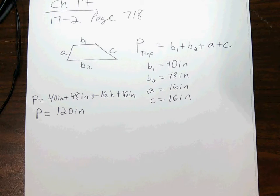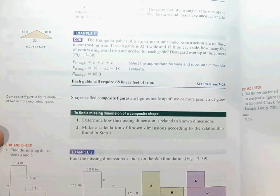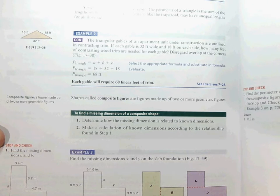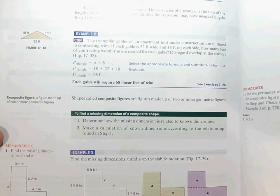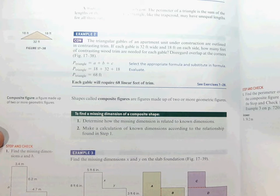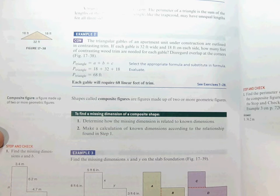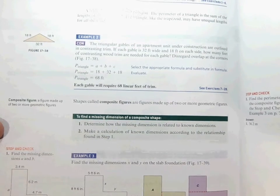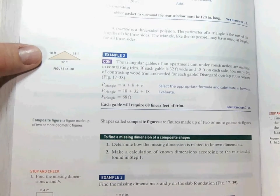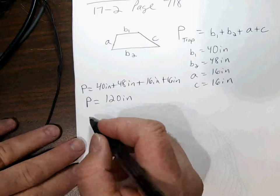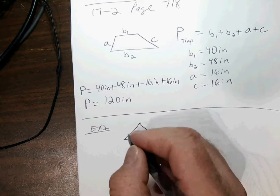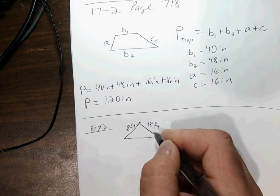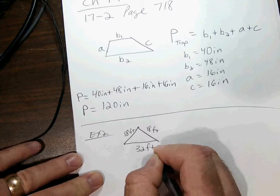Let's check out example two. Now it talks about a triangle. A triangular gable of an apartment unit under construction. The triangular gables of an apartment unit under construction are outlined in contrasting trim. If each gable is 32 feet wide and 18 feet on each side, how many feet of contrasting wood trim are needed for each gable? Disregard the overlap at the corners. So it's what we call an isosceles triangle. The two sides are the same length and then we have a base side.